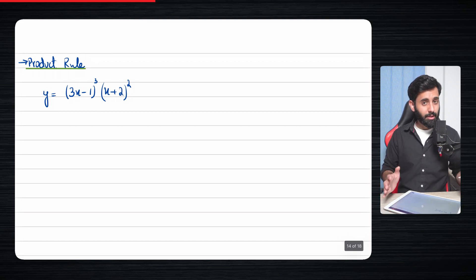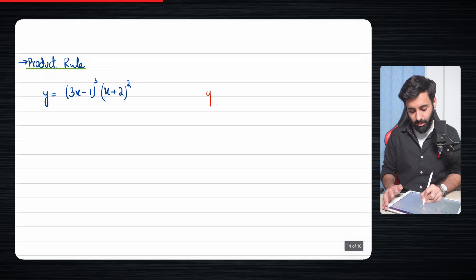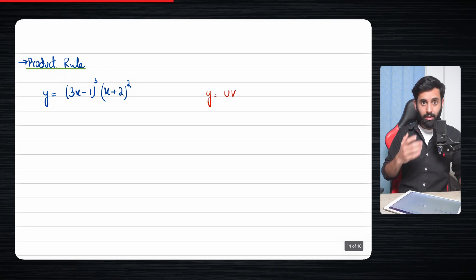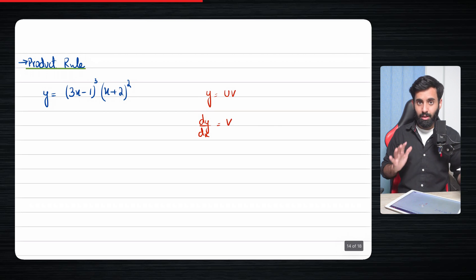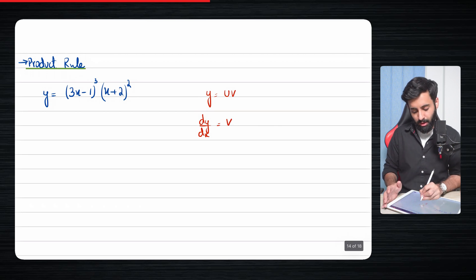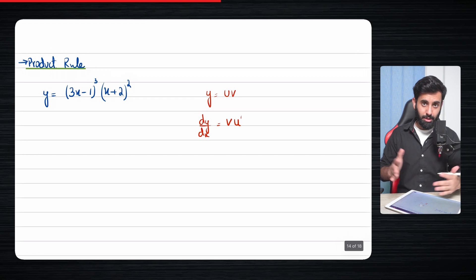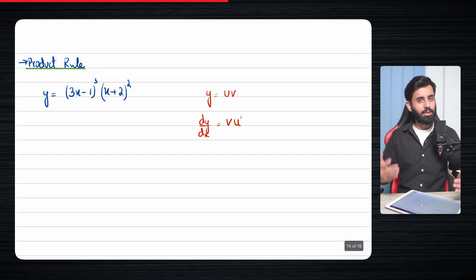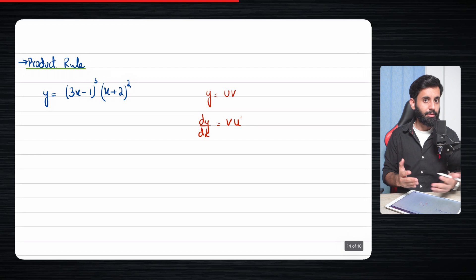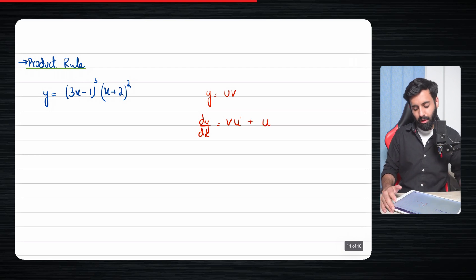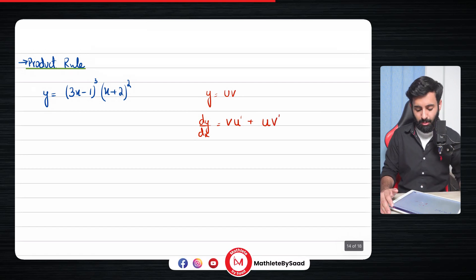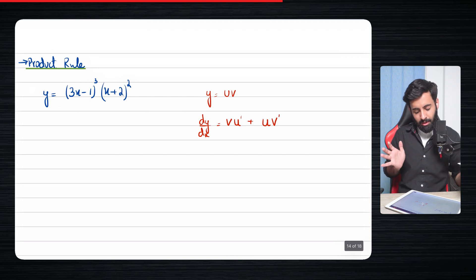Let's understand how the product rule is actually applied. We generalize the two expressions by calling one u and the other v. Every time you have to differentiate something that looks like u·v, here's how it's done: you take v as it is, multiplied by the differential of the first function, u prime, plus then you take the first function u as it is and multiply it by the differential of the second function, v prime.